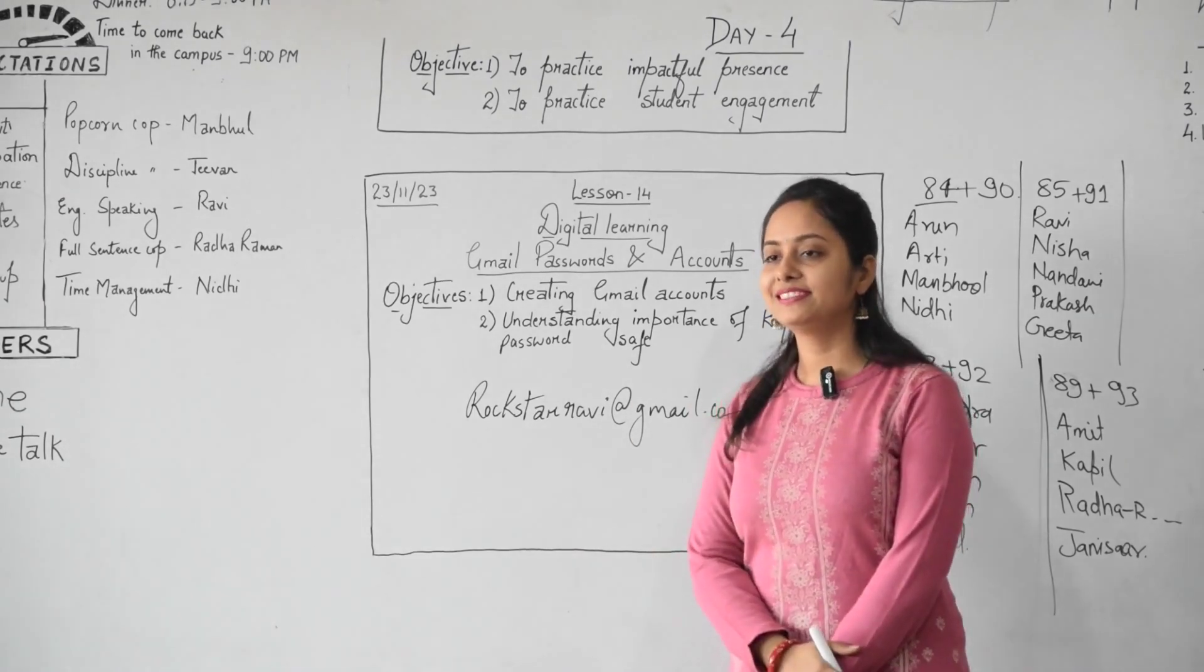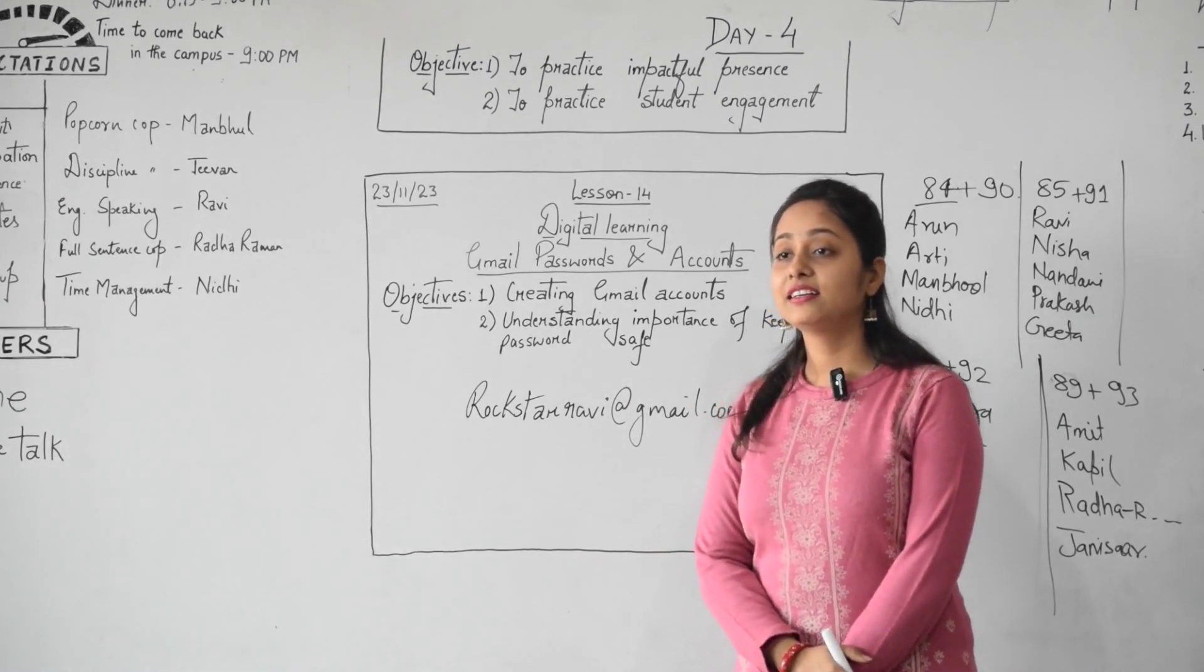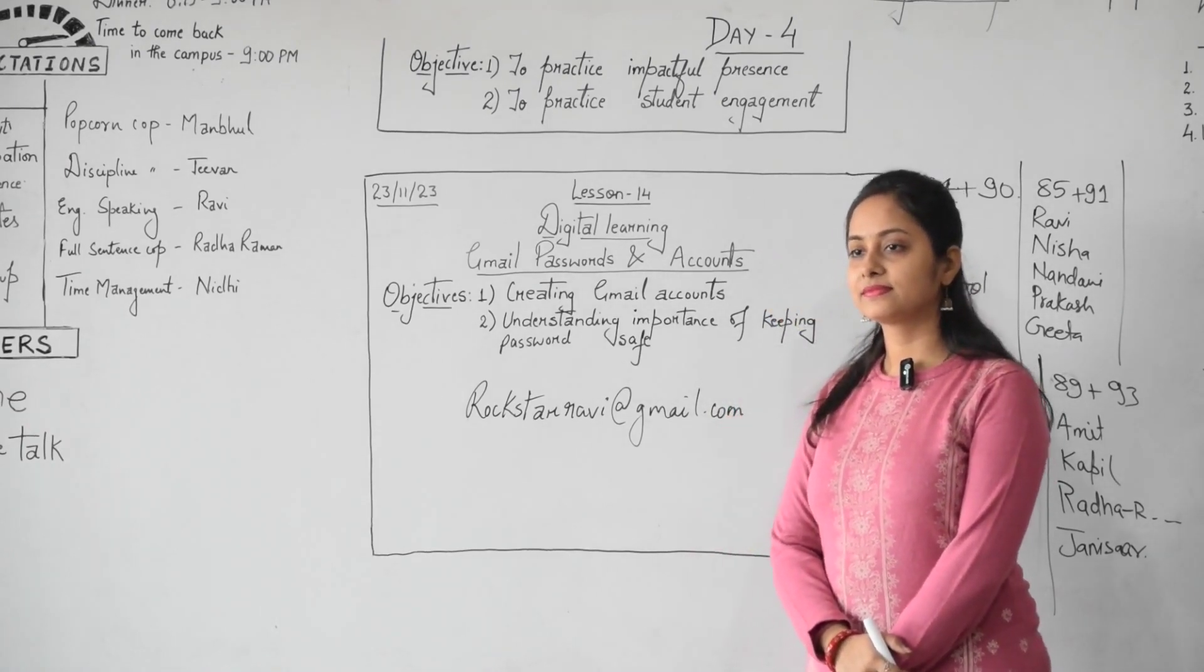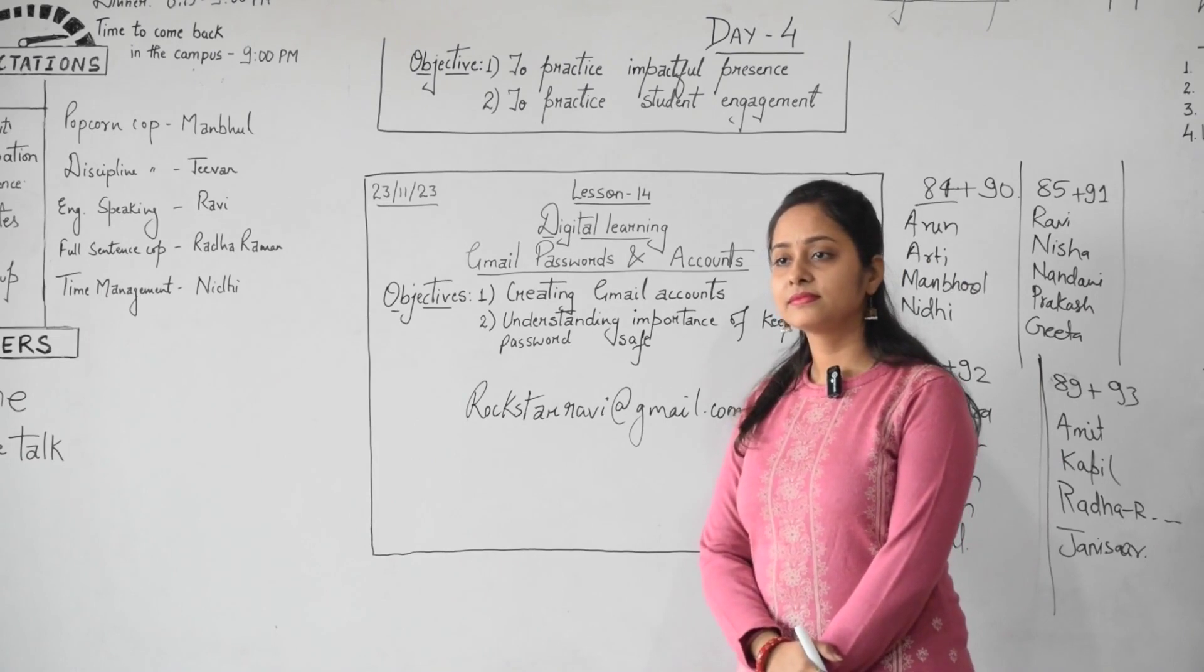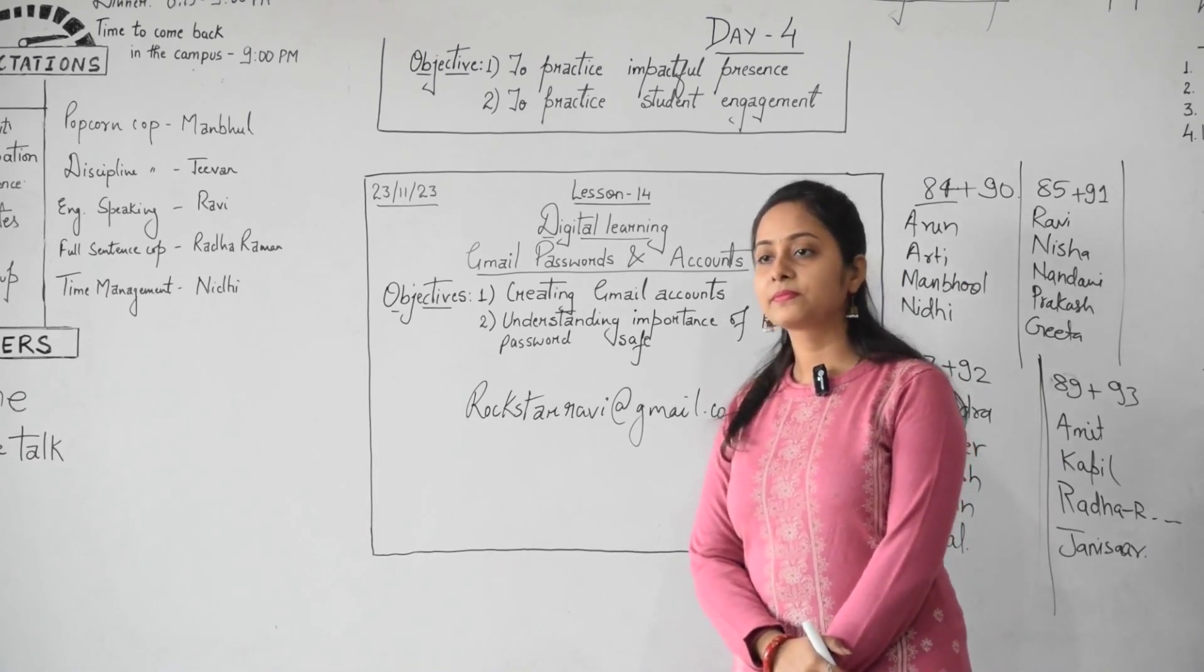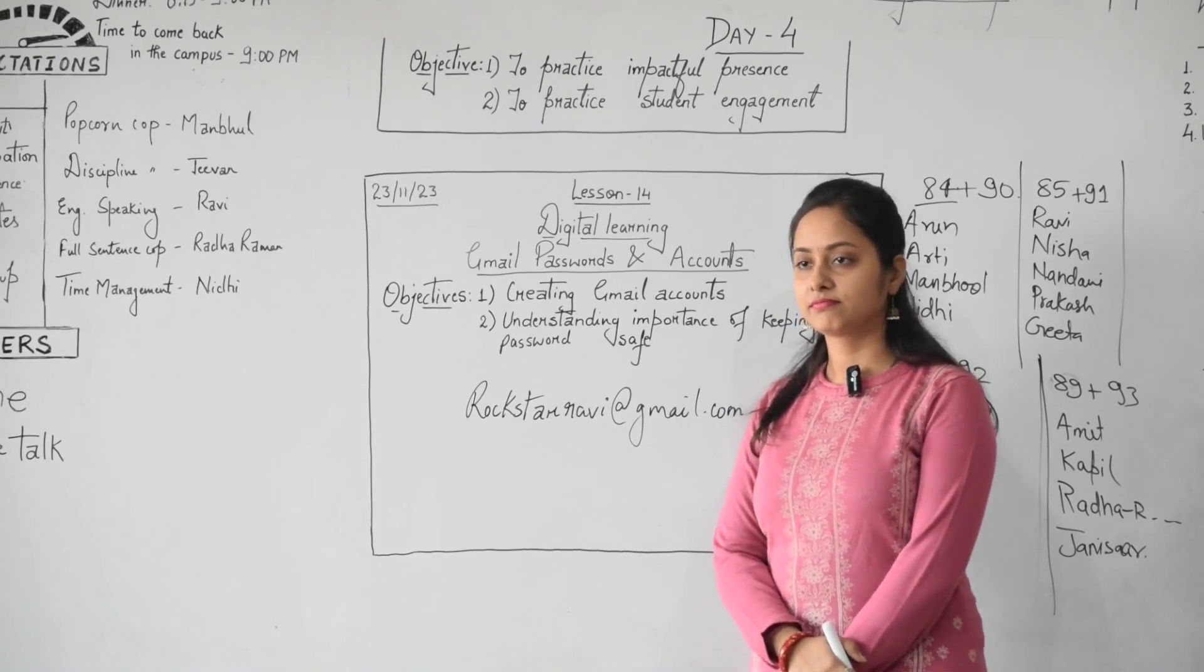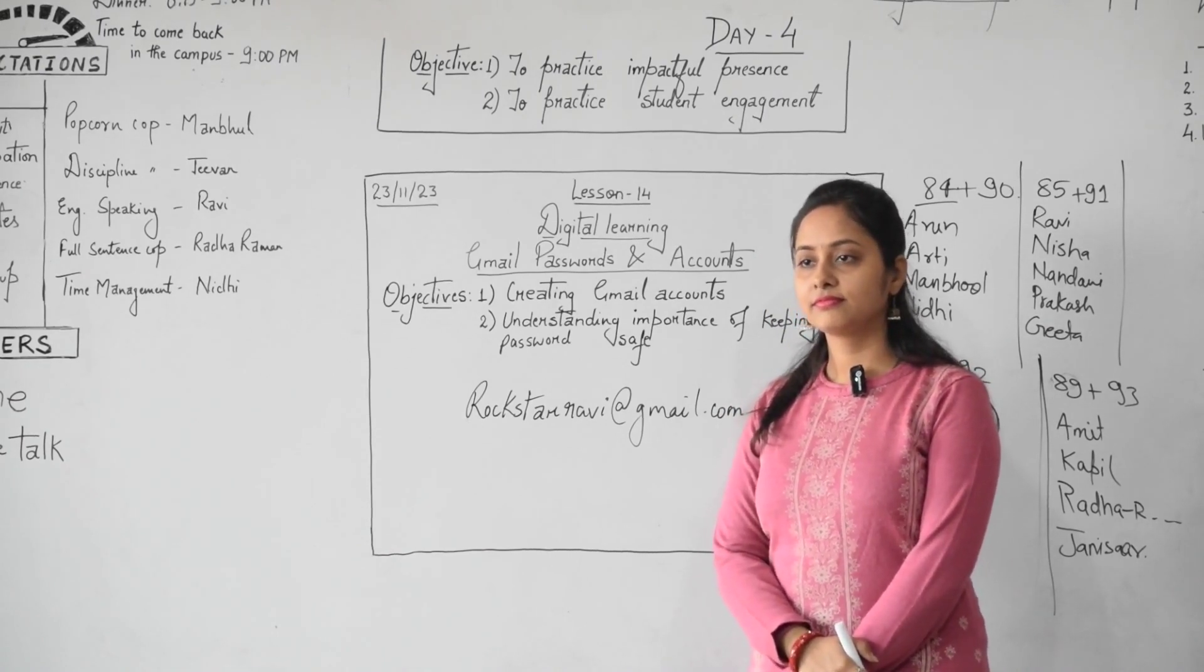My first email ID is rockstarravi@gmail.com. Is it formal or informal? Three people are standing. Why do you think it is formal? Because I know my friend Ravi, he is a rock star. What about others? What do you think?